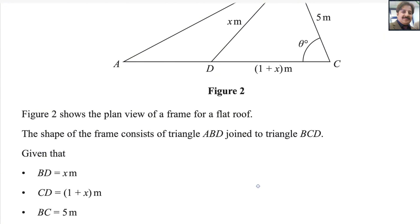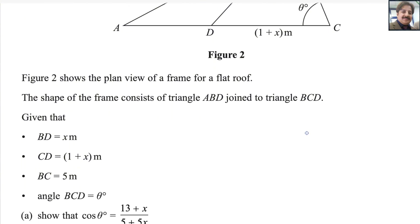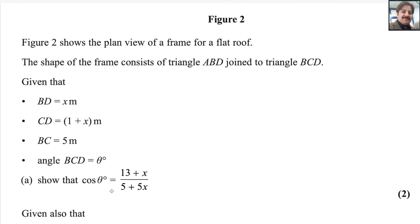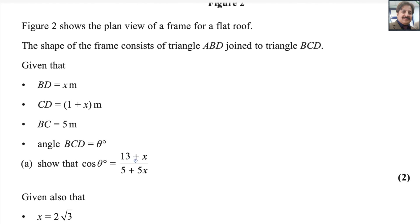Figure 2 shows the plane view of a frame for a flat roof. The shape of the frame consists of a triangle ABD joined to triangle BCD. Given that BD equals x, CD equals 1 plus x, BC equals 5, and angle BCD equals theta. Show that cosine theta is equal to (13 plus x) over (5 plus 5x).